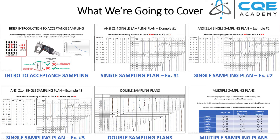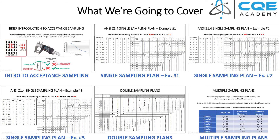We're going to go through three different examples so I can walk you through some of the nuances of the standard. Then I'm going to talk about double and multiple sampling plans. The very first example is sample size code letter L with an AQL of 1.0, and we'll look at that same scenario for double and multiple sampling.